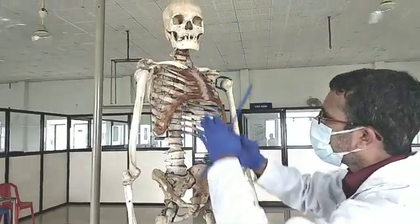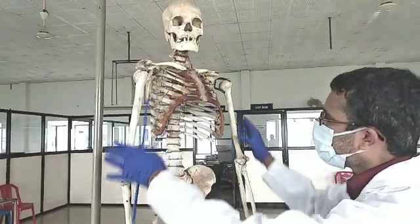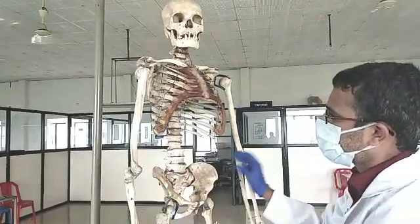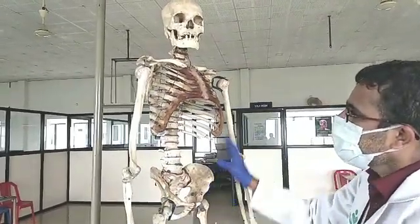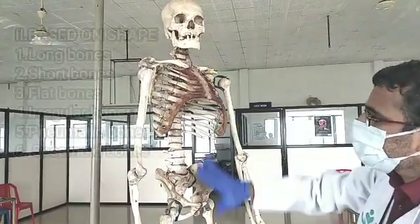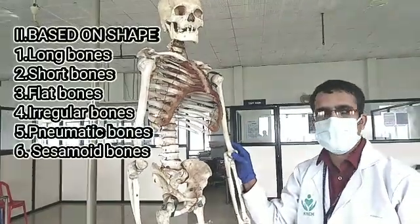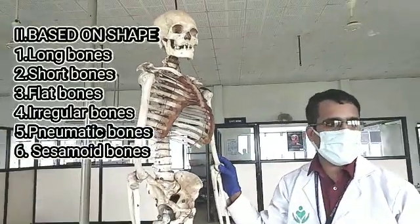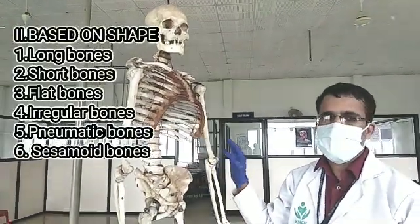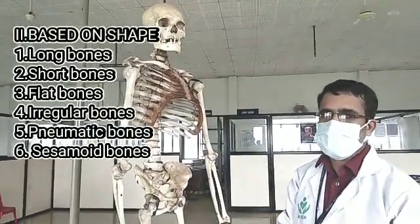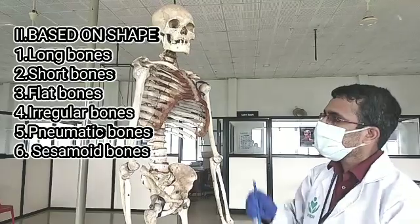So we covered axial skeleton and appendicular skeleton. Next is classification according to the shape of the bones — this is another criteria to classify the bones.